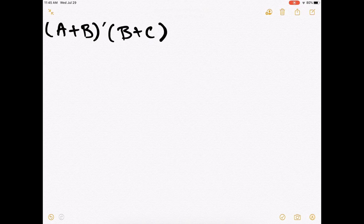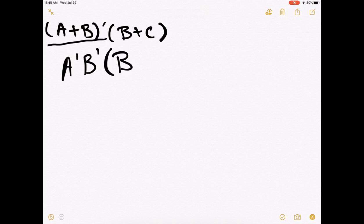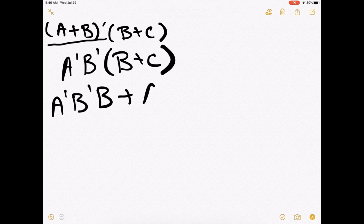The first thing we have to do is actually get rid of the knot. So what we have here is a classic situation of De Morgan's theorem. So A or B with a knot on it becomes A naught, B naught, and that's still anded with B or C there. So now let's distribute the A naught, B naught, or A naught, B naught, B, or A naught, B naught, C.